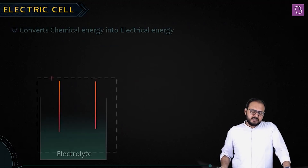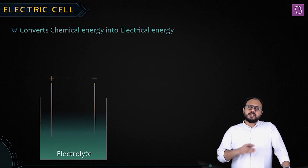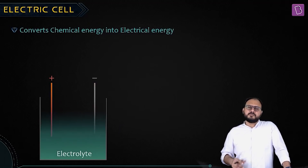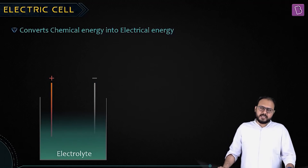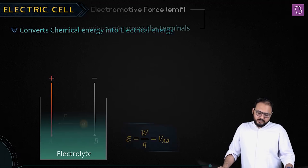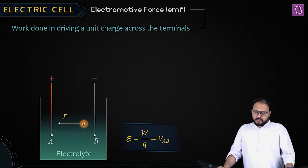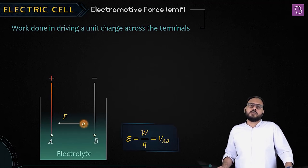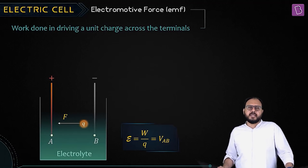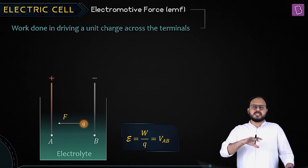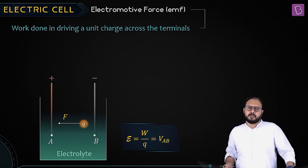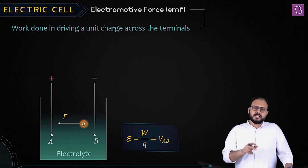What happens inside the battery? Obviously, chemical energy is being converted into electrical energy for usage. A typical construction is on your screen. The work is being done in driving a unit charge across the terminals, and that work done per unit charge is equal to the EMF — which is also the potential difference between A and B. This is the working of the cell. We'll study this in detail in the chemical effects of current and electrochemistry.